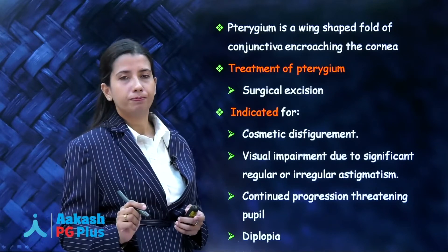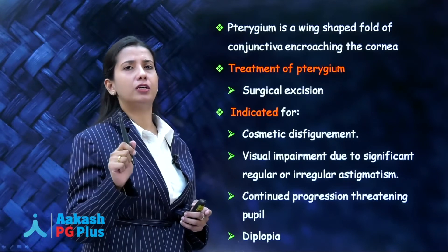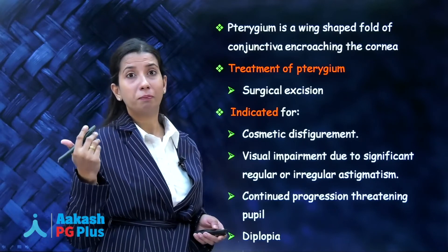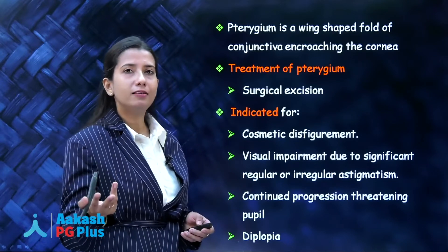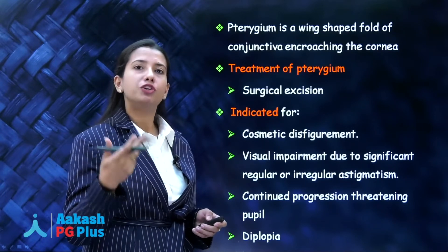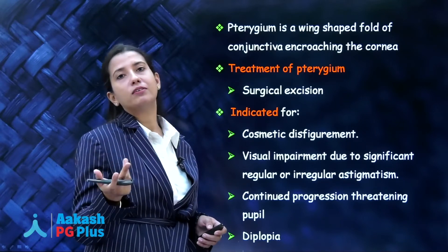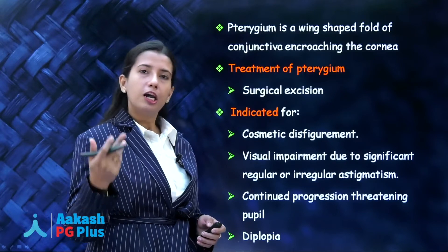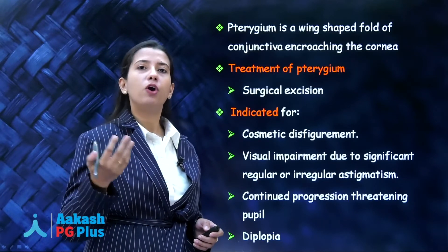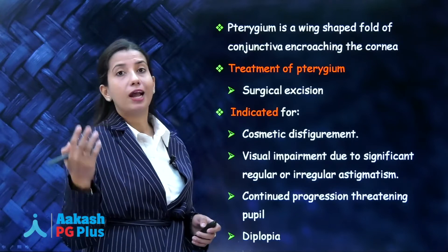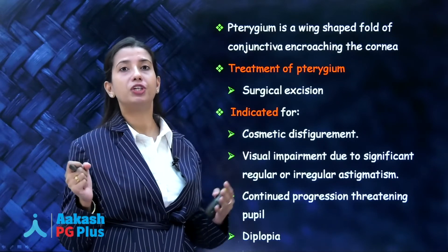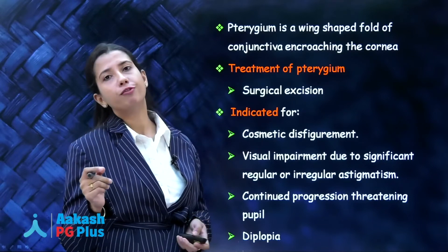When to operate? First, if the patient feels it is a cosmetic blemish and wants it removed. Second, since it is a kind of fibrosis, it distorts the cornea, causes astigmatism, and the vision might drop — so if it is causing significant astigmatism, it is better to remove it. Third, if it is encroaching on the pupillary axis, light rays will not reach beyond the pupil and vision will drop. Fourth, if the fibrosis restricts eye movement outwards causing diplopia, you must also operate.